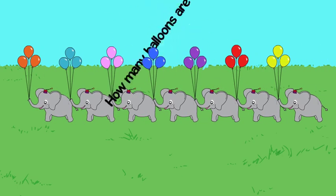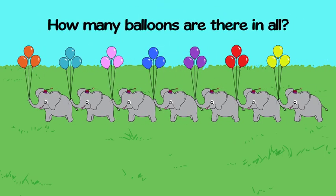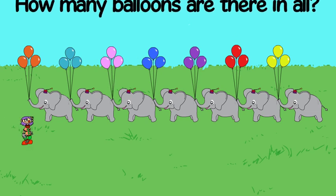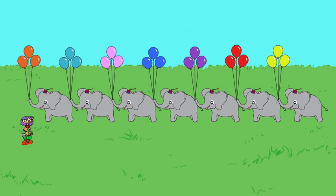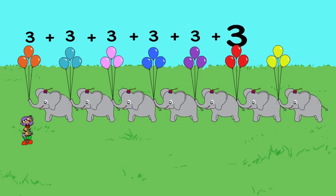How many balloons are there? I see 7 groups of 3 balloons each. So we could add 3 seven times: 3 plus 3 plus 3 plus 3 plus 3 plus 3 plus 3.